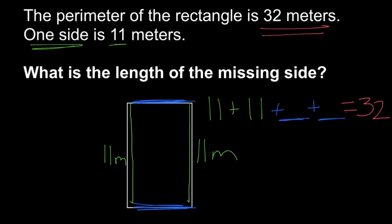So let's add the 11s. 11 plus 11 is 22. So 22 plus how many more gets us to 32?